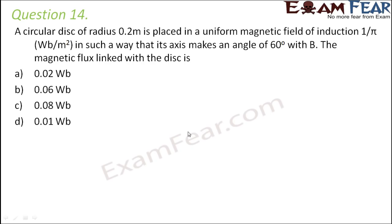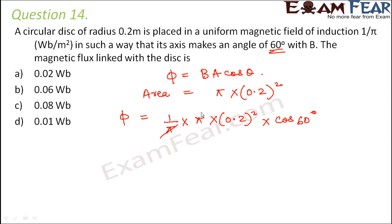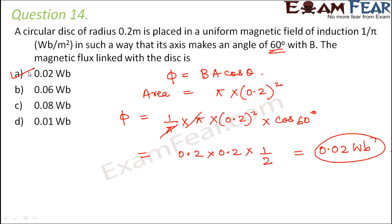Question number 14. A circular disk of radius 0.2 meters is placed in a uniform magnetic field of 1/π weber per meter squared, with its axis making an angle of 60 degrees with B. Magnetic flux equals B·A·cos θ. Area equals π·r² = π×(0.2)². So flux equals (1/π)×π×(0.2)²×cos 60° = 0.2×0.2×(1/2) = 0.02 weber. Correct option is A.